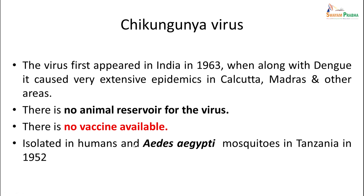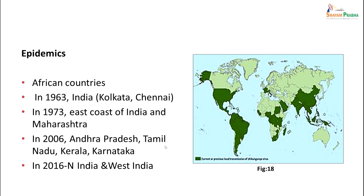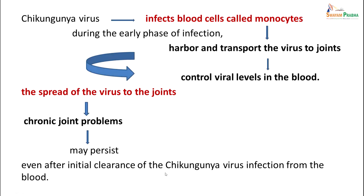Chikungunya virus first appeared in India in 1963 and along with dengue caused extensive epidemics in Calcutta, Madras, and other areas. There is no animal reservoir for this virus and no vaccine is available. It was isolated in humans and Aedes aegypti mosquitoes in Tanzania in 1952. Epidemics have occurred in African countries, and in India in 1963 (Kolkata), 1973 (Chennai), the east coast and Maharashtra, 2006 (Andhra Pradesh, Tamil Nadu, Kerala, Karnataka), and in 2015–16 in North and West India.